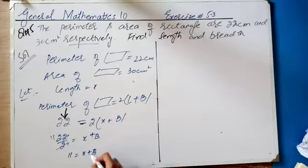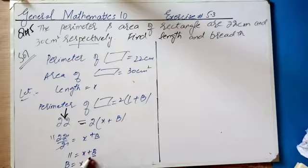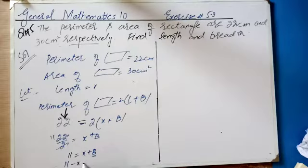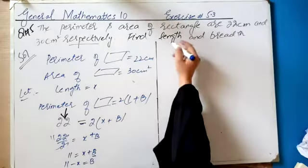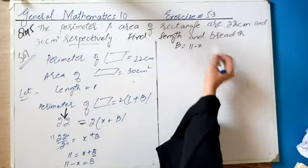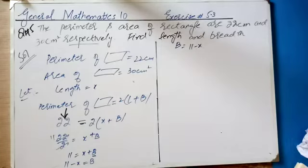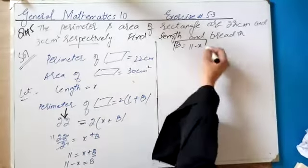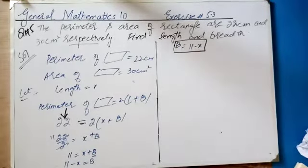Since we need to find B: B = 11 − x. Transposing x to the other side: B = 11 − x. So we have found B, that is breadth = 11 − x.